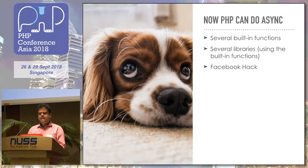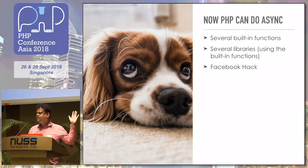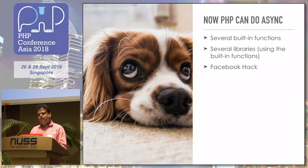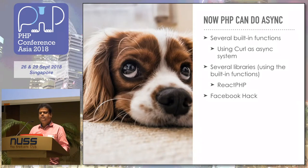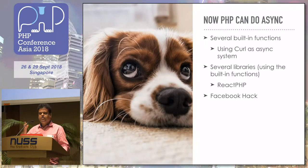PHP can do async — many of us are not really using it yet. How many of you are using asynchronous PHP? Only a few hands. So how can we do asynchronous PHP? There are a few ways — some extensions, some libraries. One simple way of implementing could be just using curl as an async system, making curl calls in a non-blocking fashion, so you can process multiple curl requests at once without blocking each other.